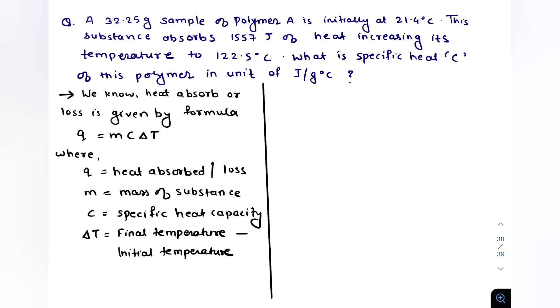Now rearranging this formula we will get the specific heat C is equal to Q divided by M delta T, which is equal to Q which is 1557 joules divided by 32.25 grams which is the mass of the polymer.